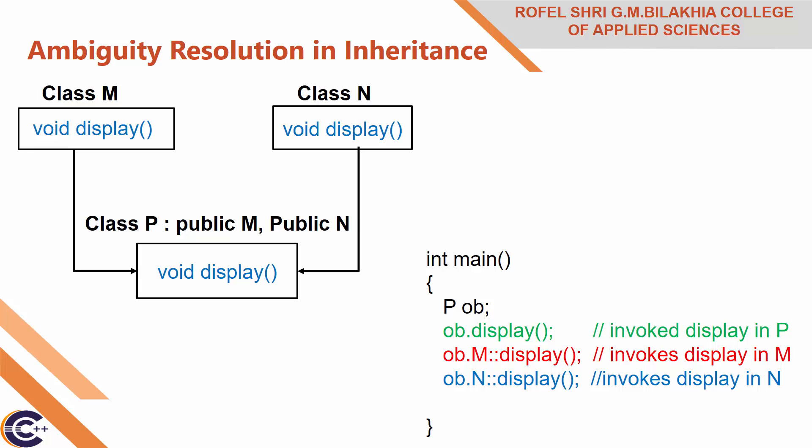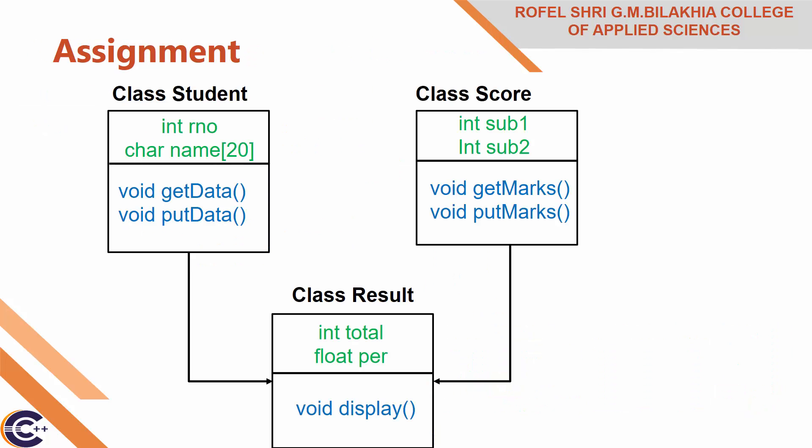In this way we can also call the display method of the child class P: ob.P::display — using child class name P with scope resolution operator and display — so it invokes display in P. In this way we can solve the ambiguity in multiple inheritance as well as in single inheritance. Hope you understand ambiguity resolution in inheritance.